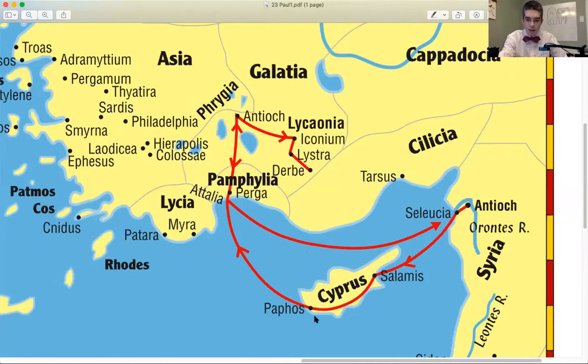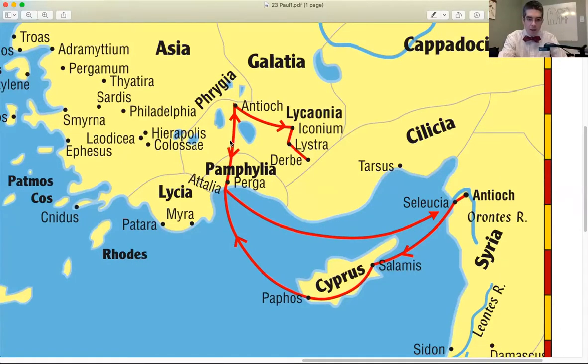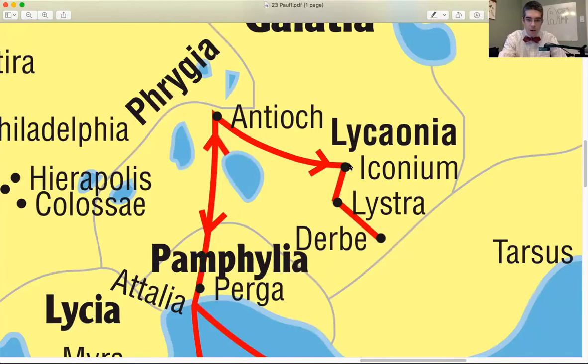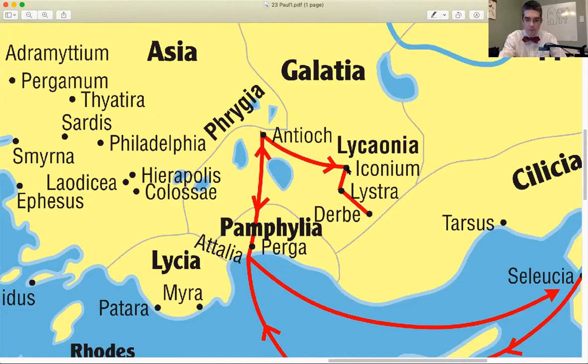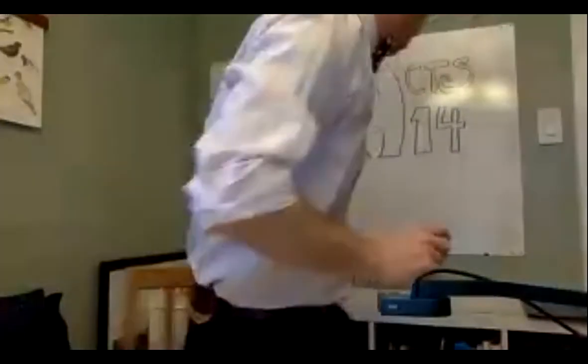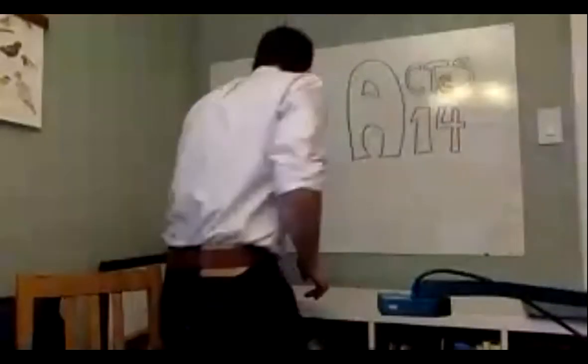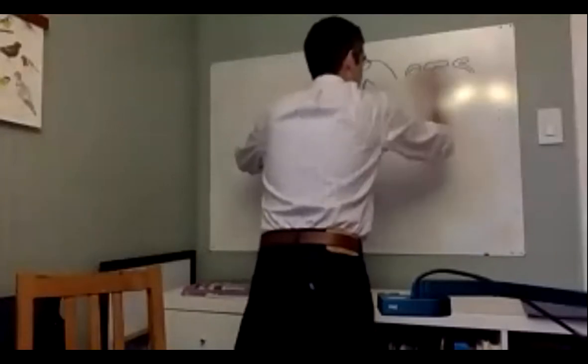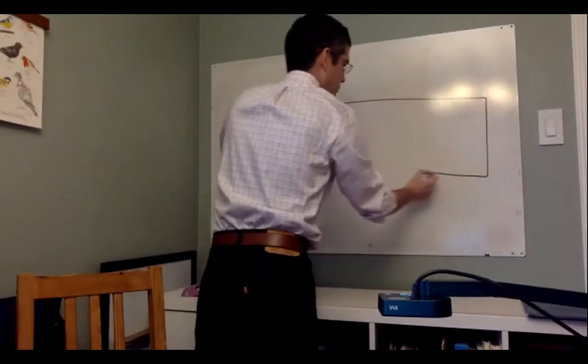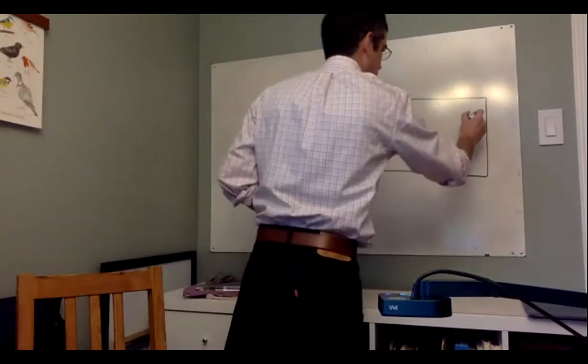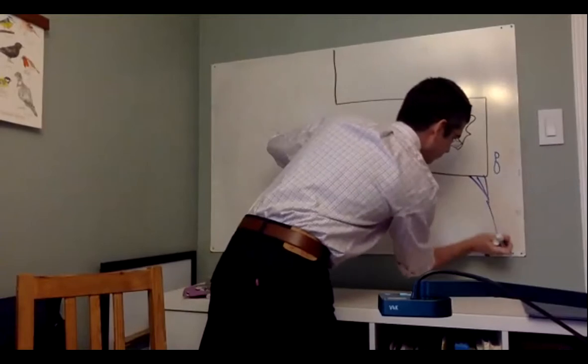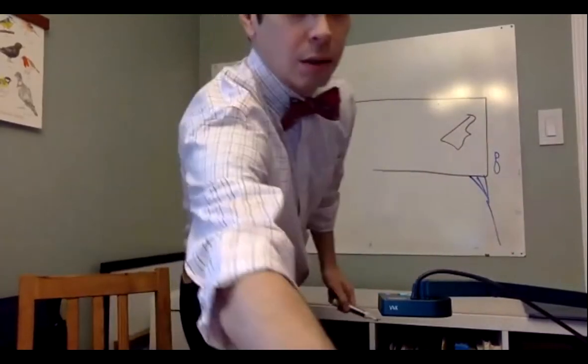So remember how they shook off their foot dust, right? They left the town. That gross, gross foot dust. So now in chapter 14, and it came to pass in Iconium. We didn't read very far before we needed to turn on the map. Okay, so screen share, find the map, open the map. Here we are.